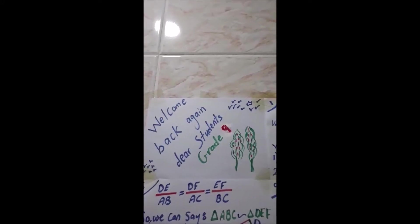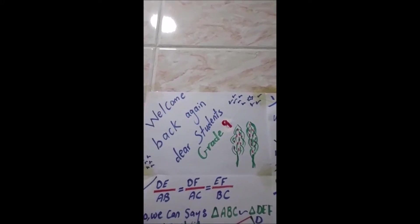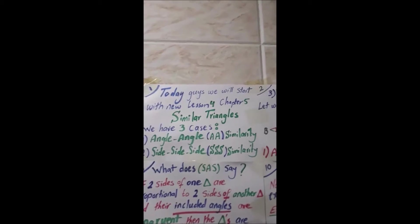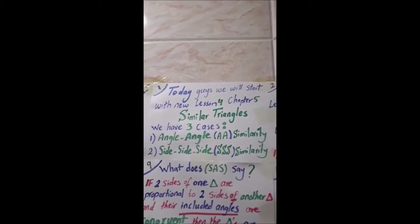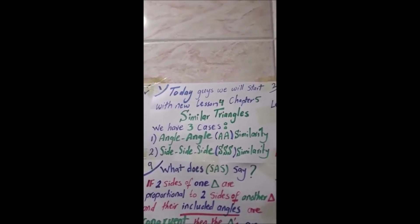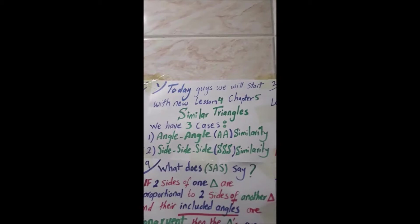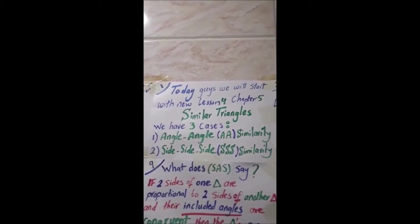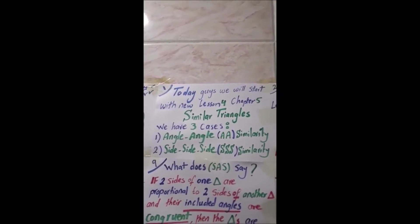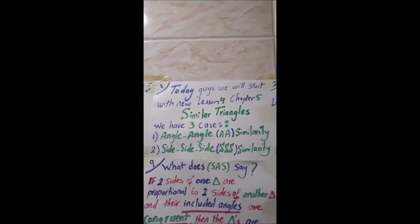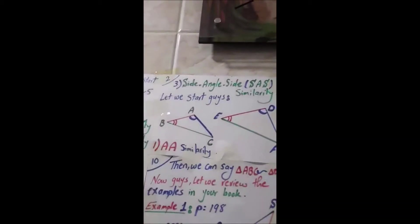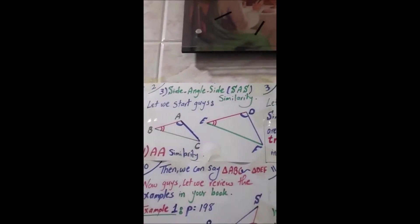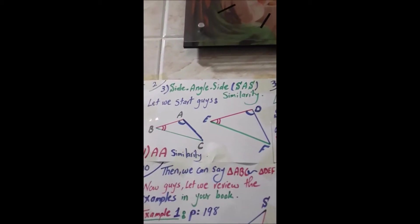Welcome back again, dear students in grade 9. Today we will start with a new lesson 4, chapter 5: similar triangles. We have three cases: one, angle-angle similarity; two, side-side-side similarity; and number three, side-angle-side similarity.